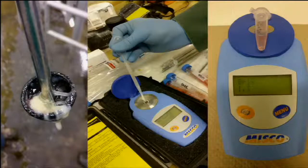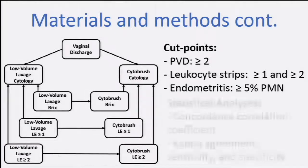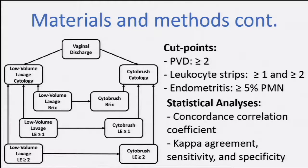For the cutoff point for PVD, it was between 29 to 35 days in milk, and the cutoff was mucous purulent vaginal discharge or worse. With the leucocyte esterase strips, we used the cutoff points that different authors already use: one and two or worse. The PMN percentage cutoff at 21 to 35 days in milk is fairly standard based on previous studies — it's 5% PMNs. To correlate and associate the samples, we used concordance correlation coefficient analysis for continuous variables, and for categorical values, kappa agreement, sensitivity, and specificity.